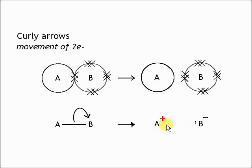A has become one more positive than it was before, because previously it was sharing electrons, and now it's completely lost them. And from the point of view of B, it's now gained an electron. It was sharing these two, but now it has both of them completely.